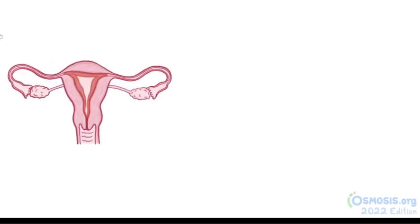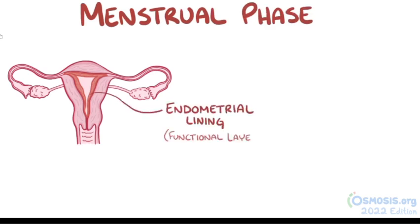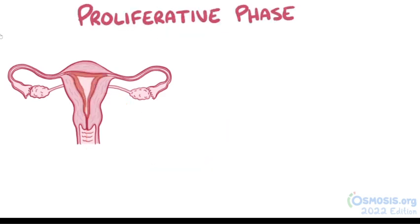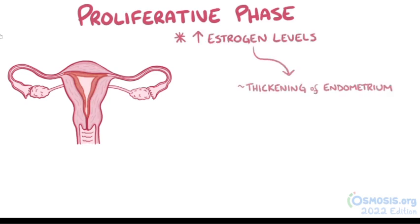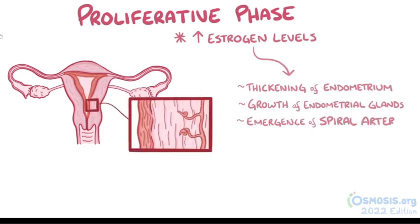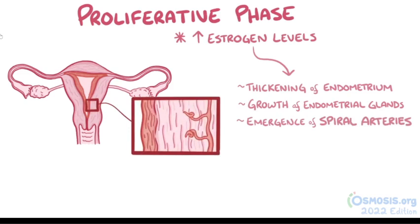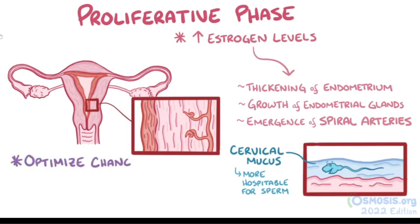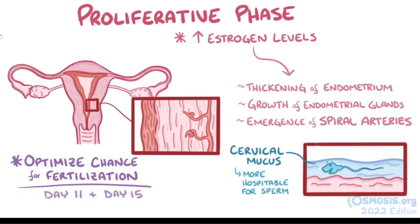While the ovary is busy preparing an egg for ovulation, the uterus is preparing the endometrium for implantation and maintenance of pregnancy. This process begins with the menstrual phase, when the old functional endometrial lining from the previous cycle is shed and eliminated through the vagina, producing the bleeding known as the menstrual period. The menstrual phase lasts an average of five days, and is followed by the proliferative phase, during which high estrogen levels stimulate thickening of the endometrium, growth of endometrial glands, and emergence of spiral arteries. Rising estrogen levels also help change the consistency of the cervical mucus, making it more hospitable to incoming sperm, with the highest chance of fertilization between day 11 and day 15 of an average 28-day cycle.